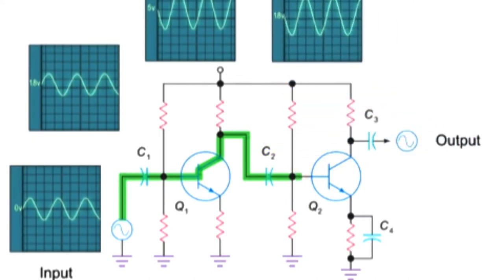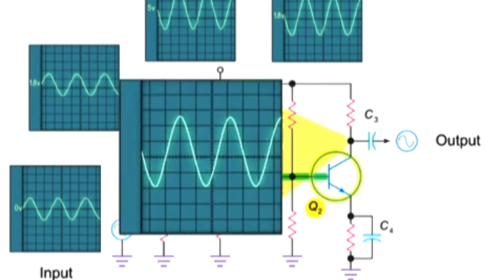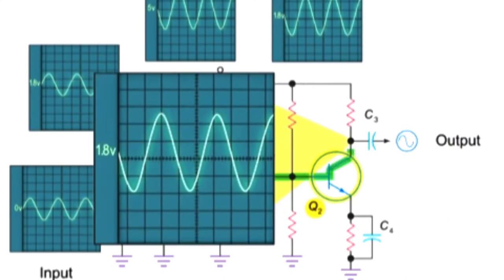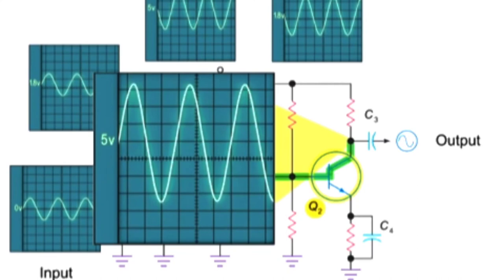Passing through the second transistor, Q2, yields an AC signal that is increased again but is also back in phase with the original input signal.